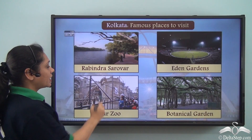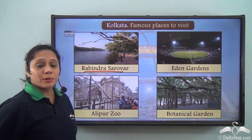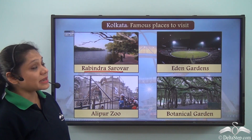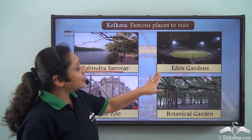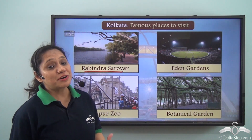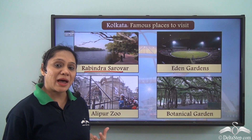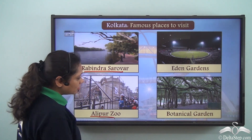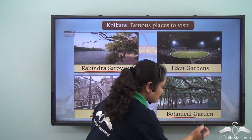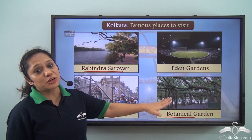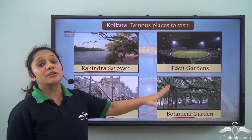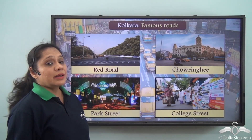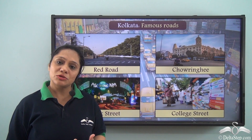The Rabindra Sarobar is a huge lake and a very beautiful place in the heart of the city. Eden Gardens is a ground where some iconic cricket matches have been played. The Alipur Zoo and the Botanical Garden are also notable; the Botanical Garden of Kolkata has the oldest banyan tree in the country.